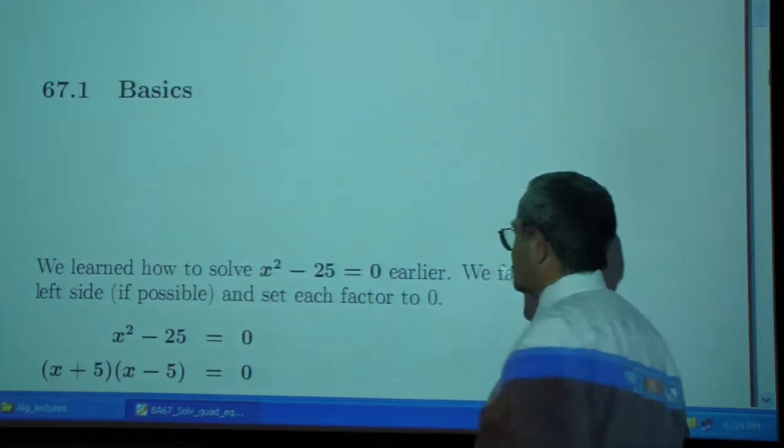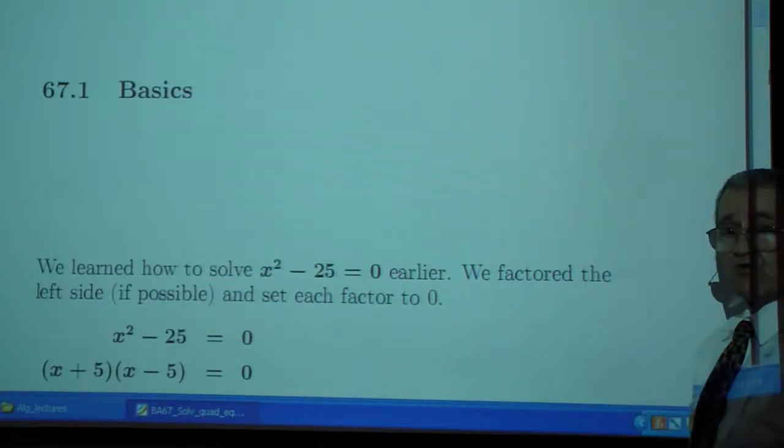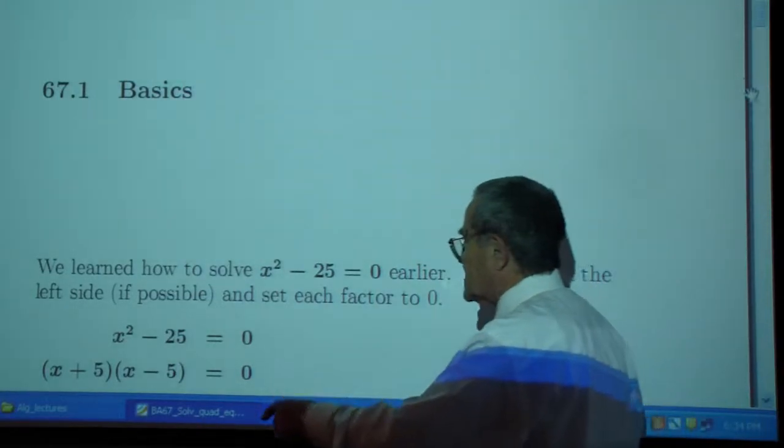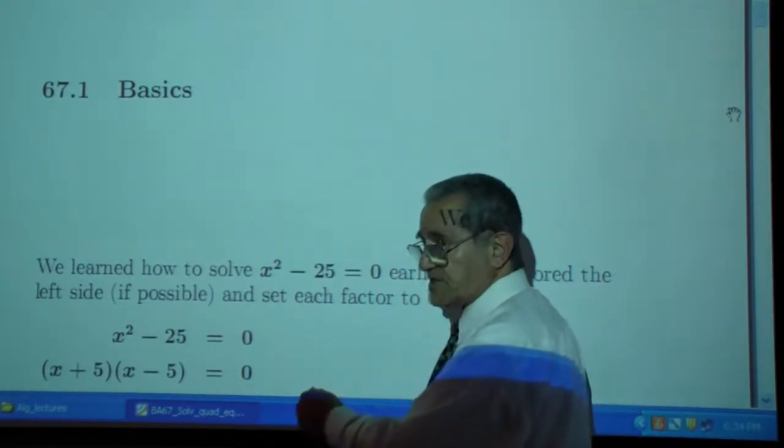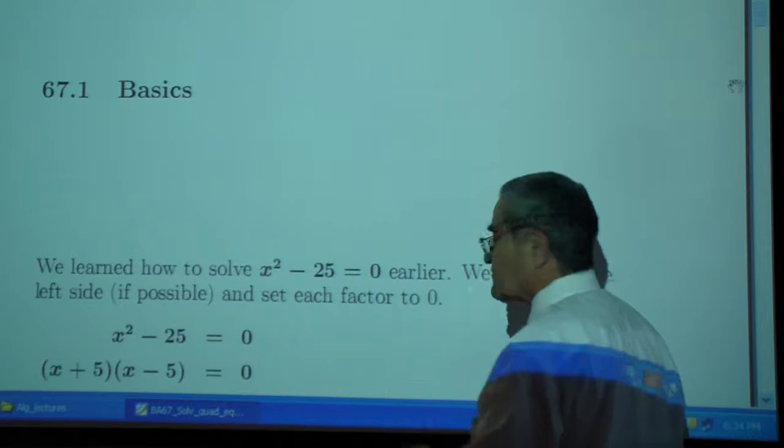We learned how to solve x squared minus 25 equals 0 earlier. We factored the left side, if possible, and in this case it is possible, and set each factor to 0.